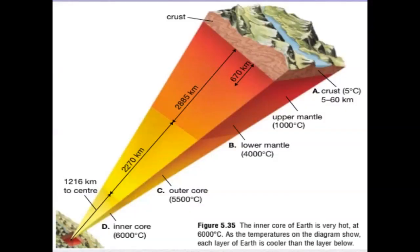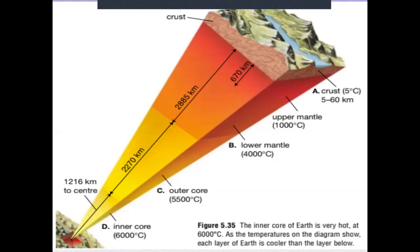This is our textbook picture showing the different layers. The crust is the top layer, then the mantle is the second layer. Then you have the outer core, which is liquid, and the inner core, which is solid.